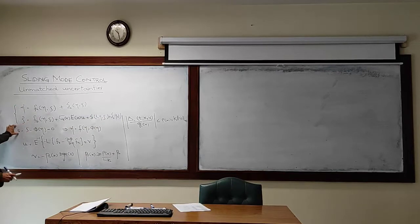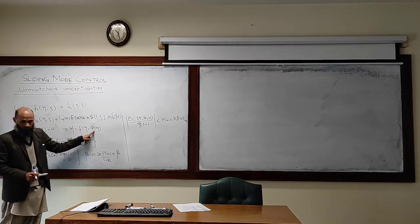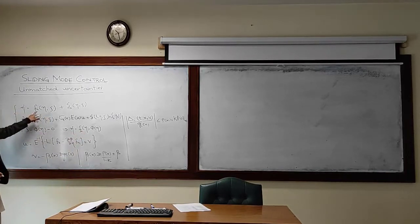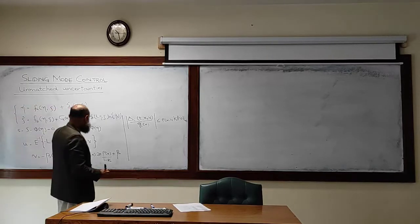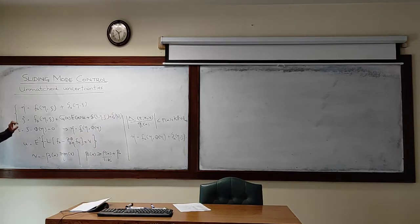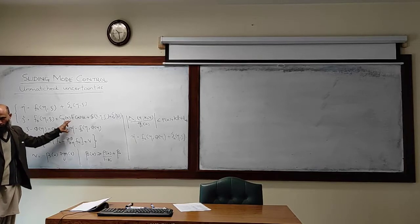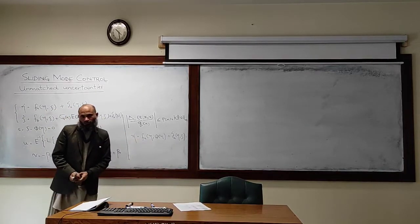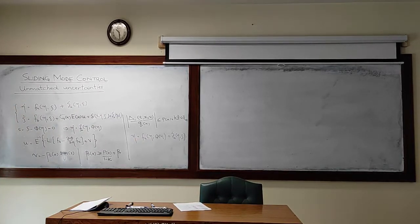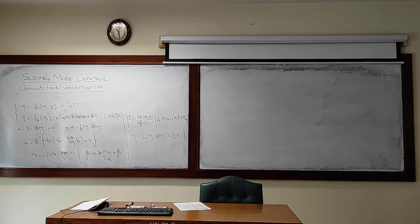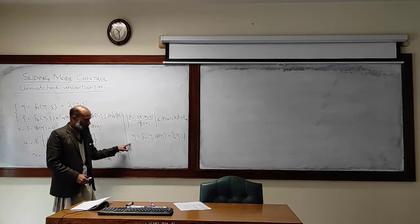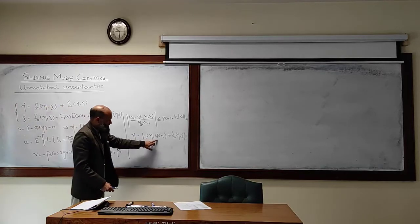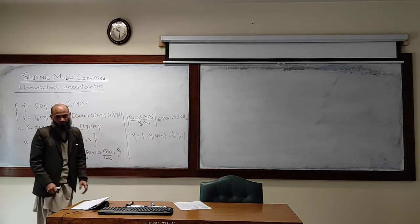What about the behavior of the system on the sliding surface? Phi of eta was selected to stabilize the system. Previously, dynamics on the sliding surface were governed by one equation; now, with unmatched uncertainty, the dynamics are governed by a different equation. If this phi of eta can asymptotically stabilize the equilibrium point of that uncertain system, then sliding mode control will work. If phi of eta cannot handle this uncertainty, sliding mode control will not work.